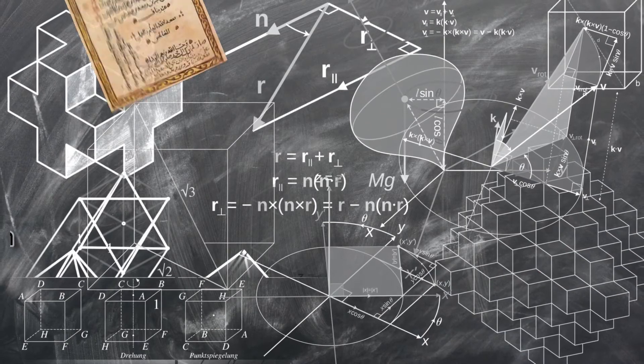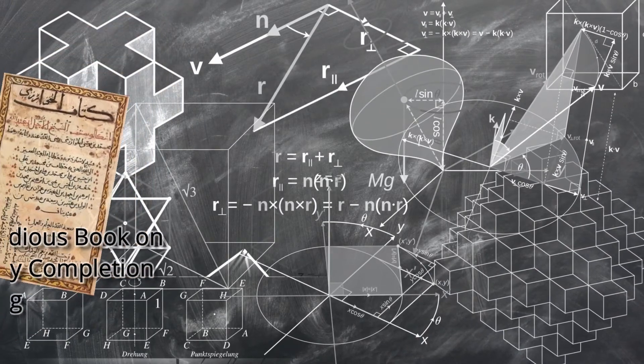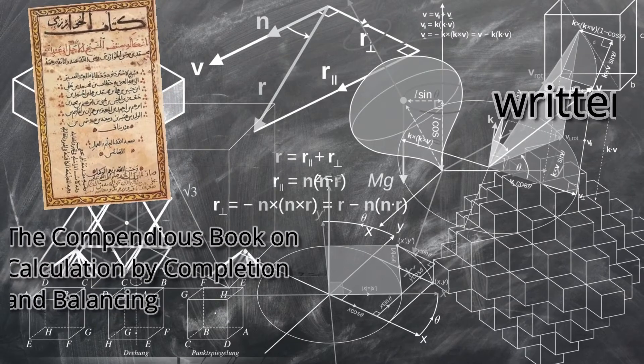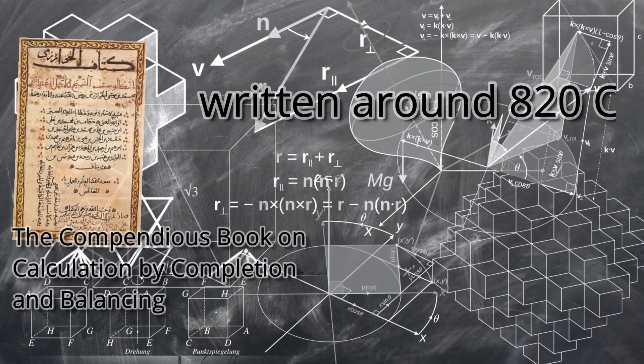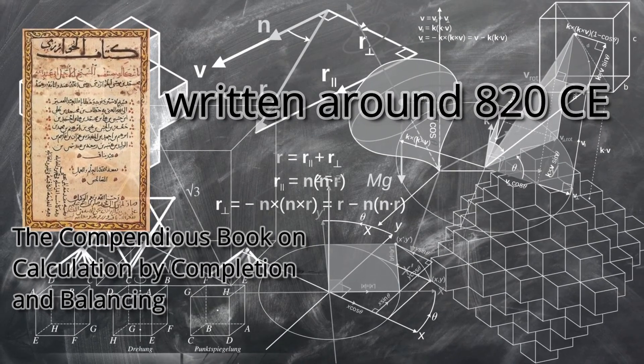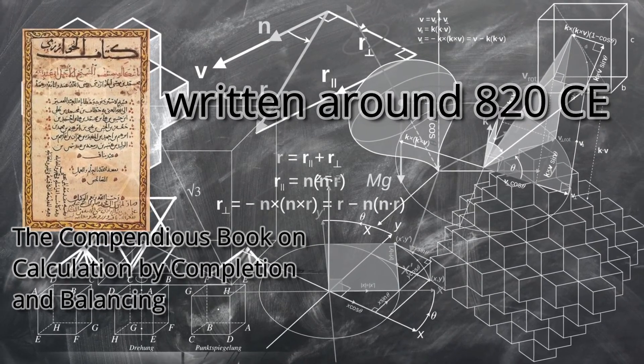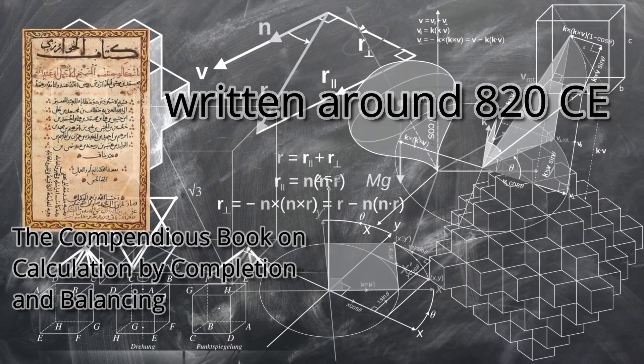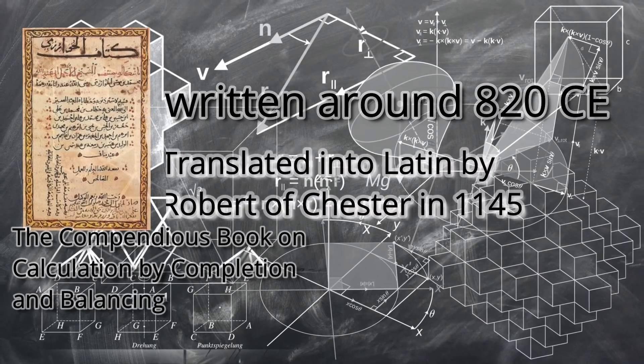The Compendious Book on Calculation by Completion and Balancing is an Arabic treatise on mathematics written around 820 CE, while Al-Khwarizmi was in the Abbasid capital of Baghdad, translated into Latin by Robert of Chester in 1145.